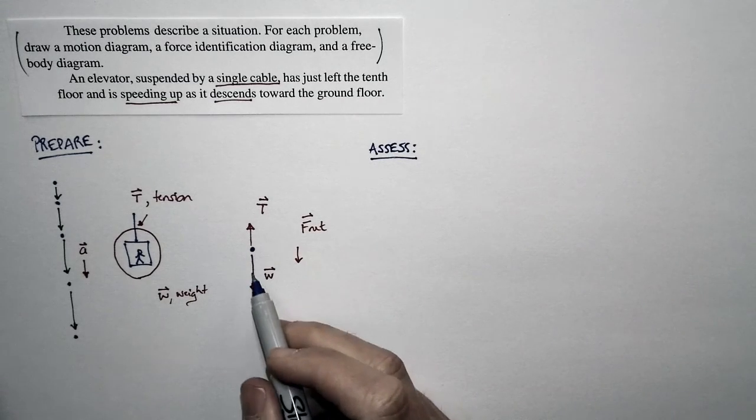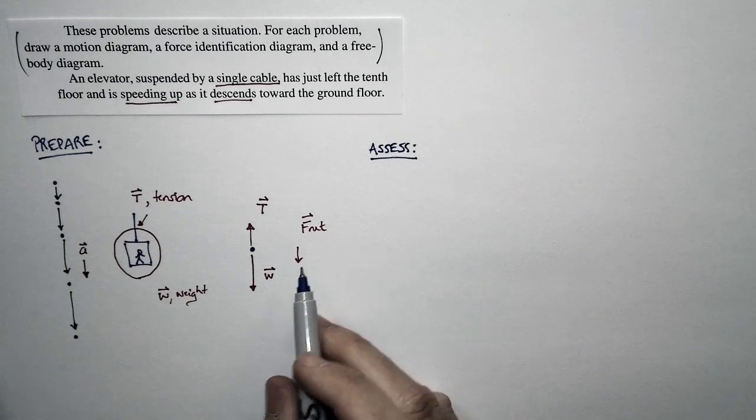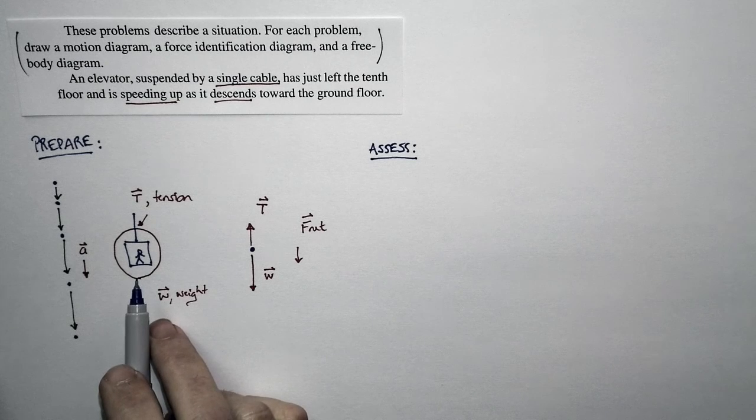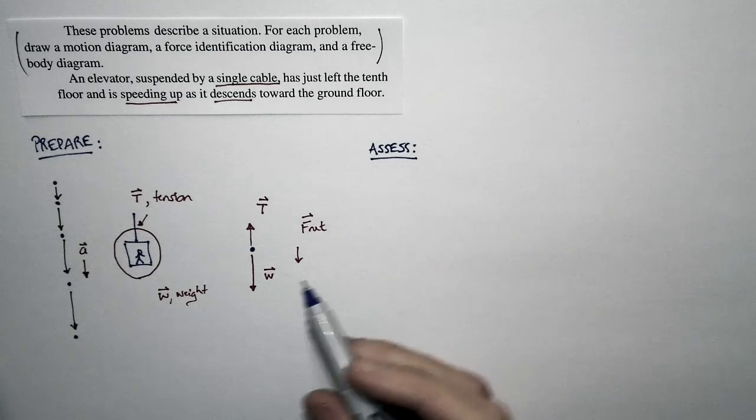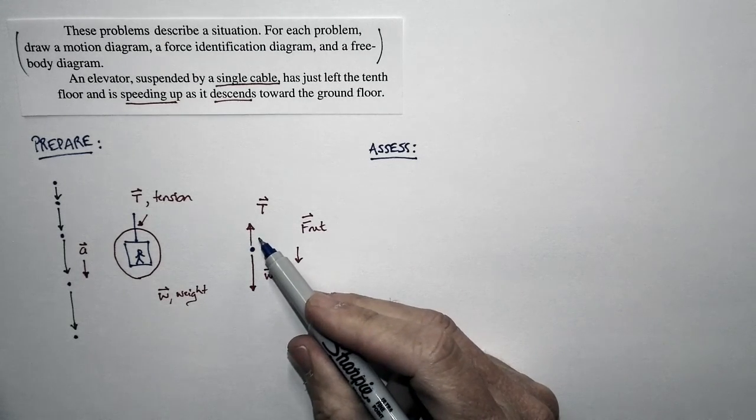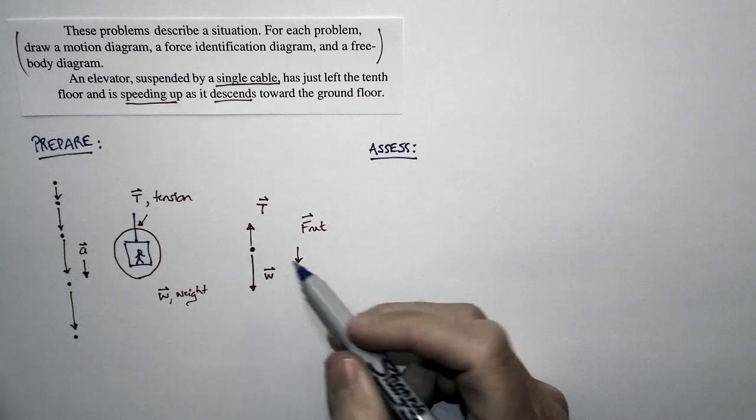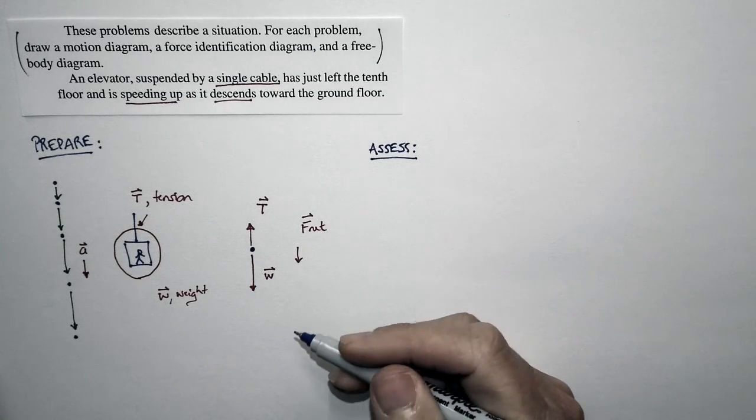If the tension force and the weight force were equal, the net force would be zero, and the elevator wouldn't be speeding up. But it is speeding up. And the way you make this happen is you just reduce the tension. Then the weight force is bigger than the tension. There's a net force downward, and the elevator drops.